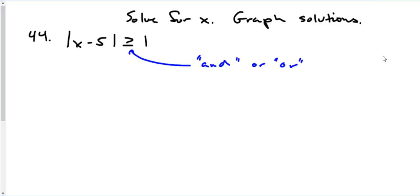When you have an absolute value which is greater than, or greater than or equal to, a value — in this case, one — we're going to get an OR statement. Whenever we have the absolute value greater than or equal to something, it's going to be an OR statement, meaning you're going to have two different values.